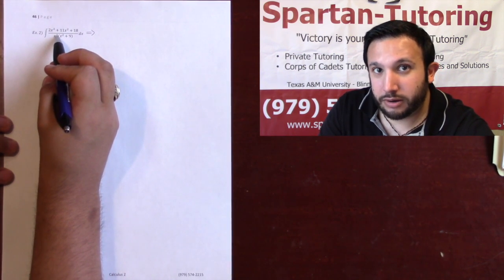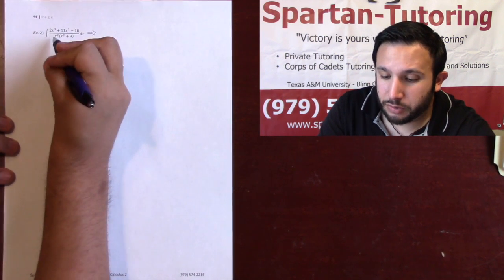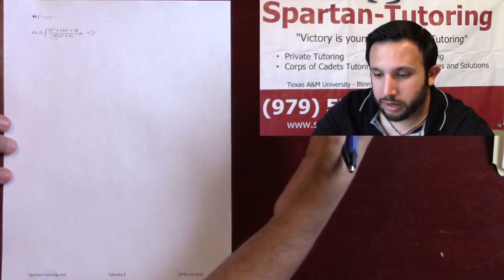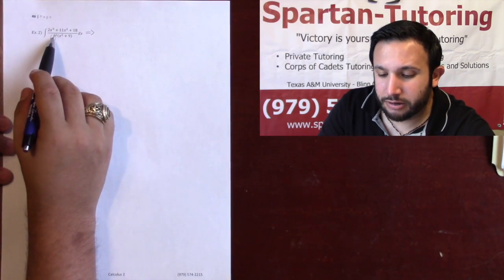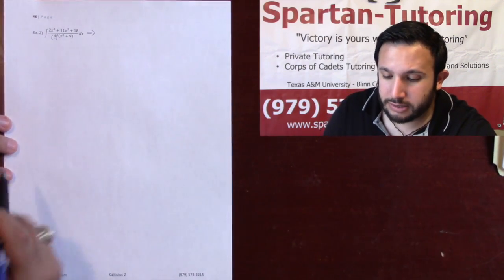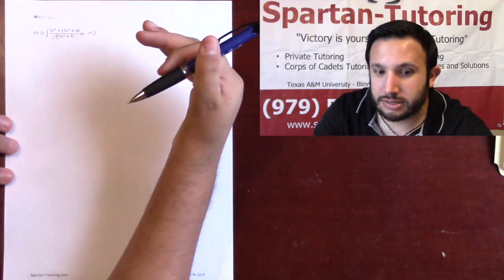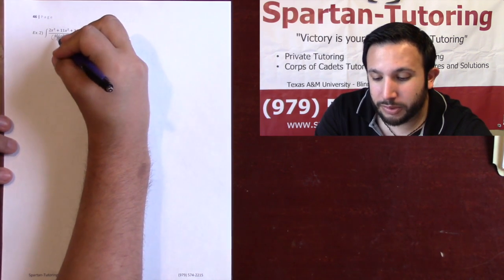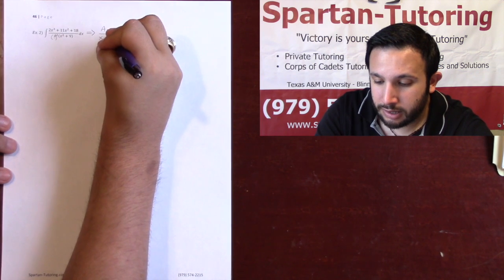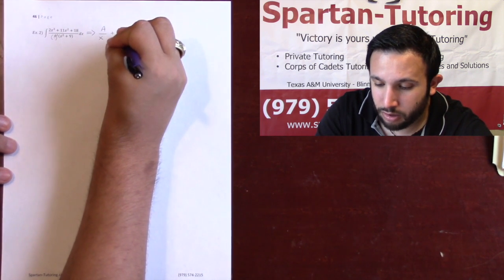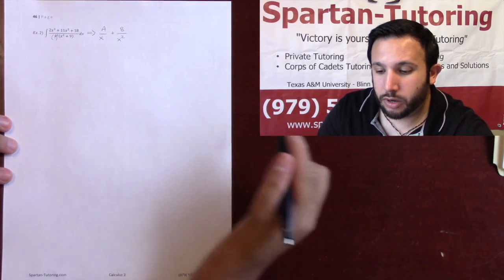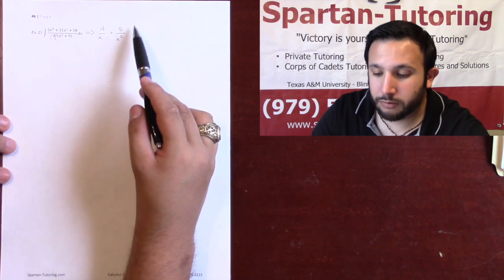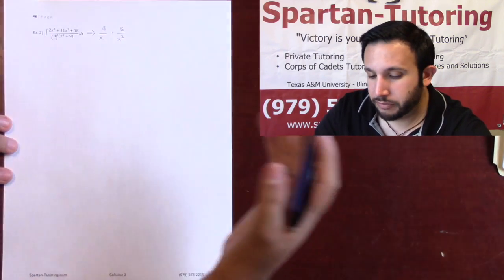Take a look at this x squared. Don't think of x squared as quadratic. Instead, think of x squared as a linear function that is being repeated. Because of that, one less than a linear is a constant, so I'm going to have a constant A over x. But because I have two of them, I need to repeat again, and put an arbitrary constant B over x squared. If you had x cubed, you'd have A over x plus B over x squared plus C over x cubed, and so forth.